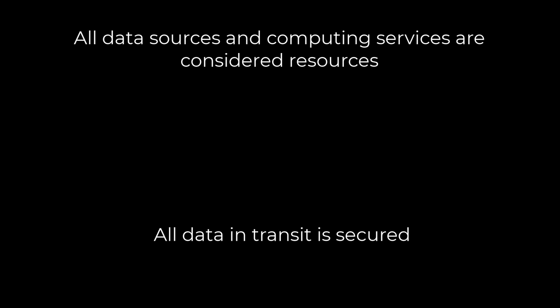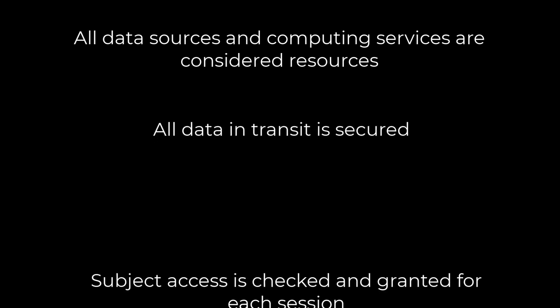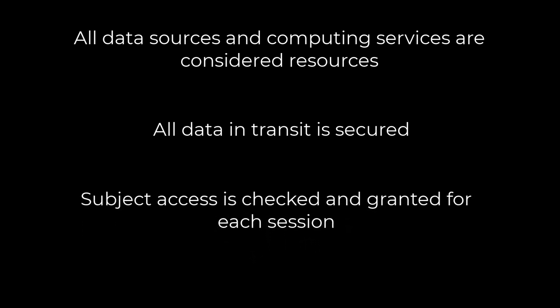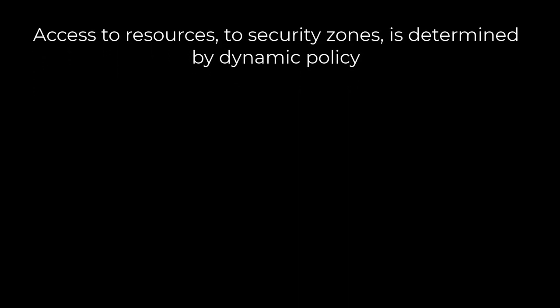To review, the Zero Trust objectives we're trying to reach with our infrastructure are based on the recommendations of NIST Special Publication 800-207, entitled Zero Trust Architecture. First, all data sources and computing services are considered resources. All communication is secured regardless of network location. Access to individual enterprise resources is granted on a per-session basis. Access to resources is determined by dynamic policy, which includes the observable state of the subject's identity, application, and device; the subject's behavior; time of access; day of access; geographic location of the subject; the classification and categorization of the resource being accessed; and anything else the administrator controls with policy.